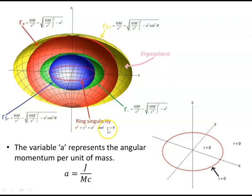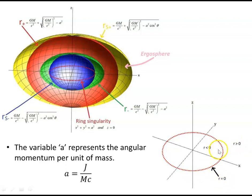The ring singularity satisfies x² + y² = a² at z = 0. The variable a represents the angular momentum per unit mass times c. On the ring itself, r equals zero. Outside the ring, r is greater than zero. And within the ring, r is less than zero — r takes on negative values. We've covered that in the closed timelike curves in the playlist on causality.